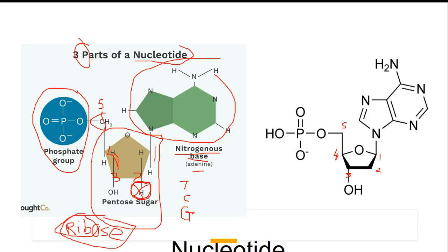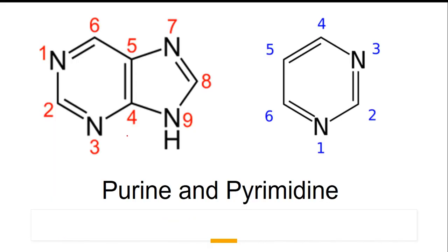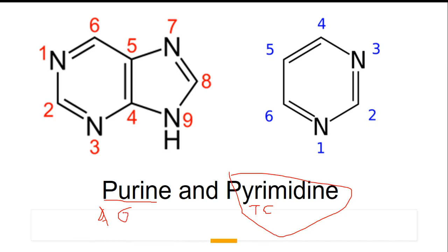There are four types of bases: adenine, thymine, cytosine, and guanine. These are of two types: purines and pyrimidines. Thymine and cytosine are pyrimidines; adenine and guanine are purines. Purines have two heterocyclic rings and pyrimidines have only one heterocyclic ring.